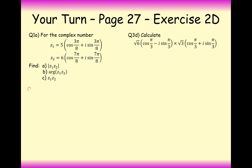Let's work through part A of question 1: the modulus of Z1·Z2. We multiply the moduli separately. The modulus of Z1 is 5 and the modulus of Z2 is 6, so |Z1·Z2| = 5 × 6 = 30.